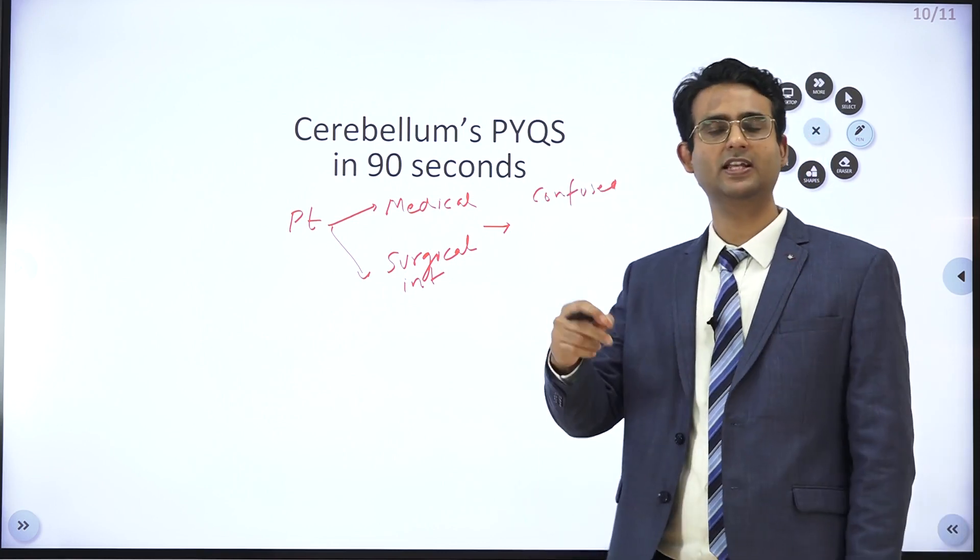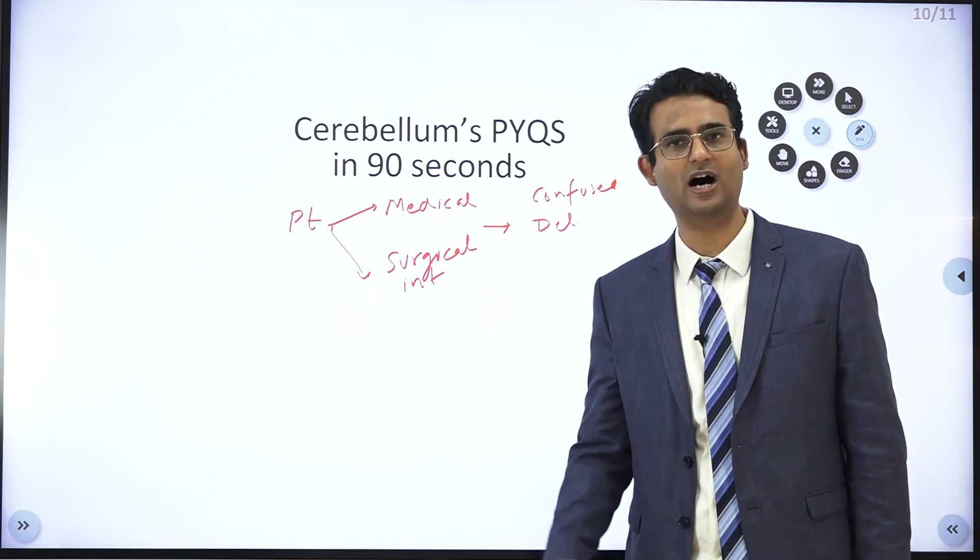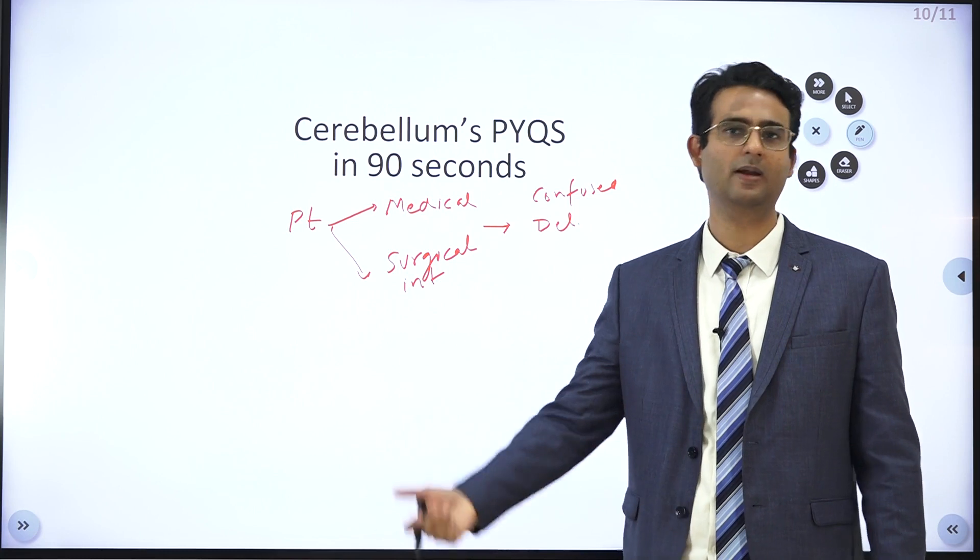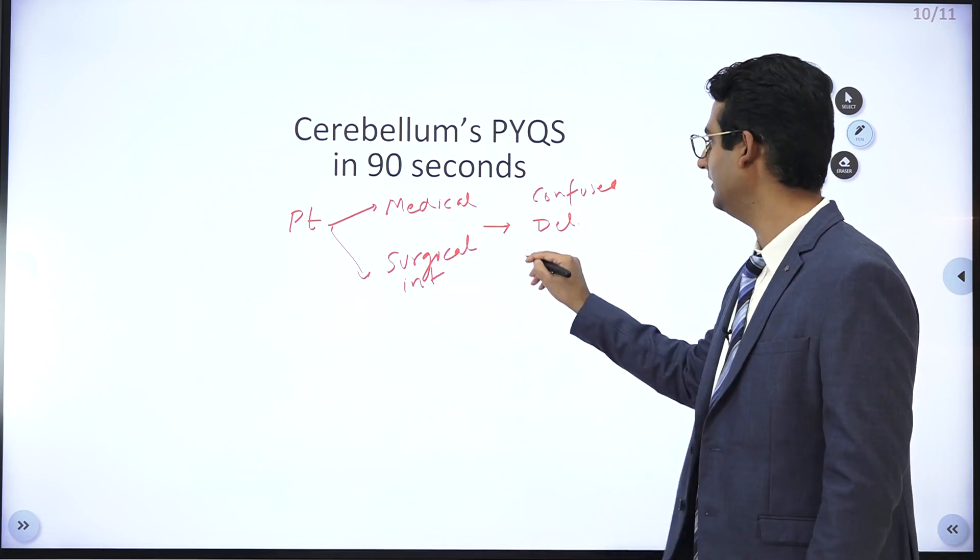Agitated. Then they will give history suggestive of delusions, such as the patient feels that the doctor is trying to harm him, nurse is trying to harm him. They may even say that the patient is becoming violent.